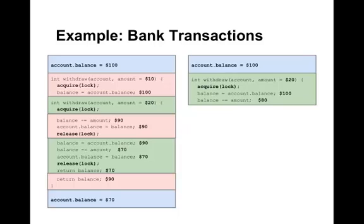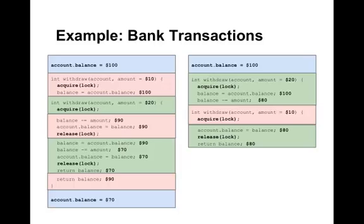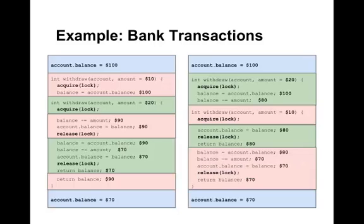Now let's look at what happens if the green thread runs first. It will call acquire on the lock and update the balance to $80. When the pink thread starts running and calls acquire, it will again be blocked until the green thread calls release. Only after the green thread releases and updates the balance to $80 can the pink thread start running. It will see the balance is $80, subtract $10, update it to $70, release the lock, and return. No matter which thread runs first, we get the same balance of $70.